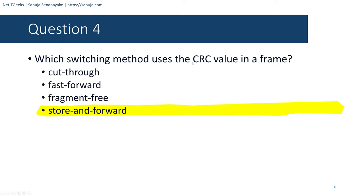Question number twelve: What OSI physical layer term describes the amount of time, including delays, for data to travel from one point to another? Options are latency, fiber optic cable, air, or copper cable. This is straightforward — three of the answers are physical media. The answer is latency, which describes the time including delays for data to travel from one point to another.